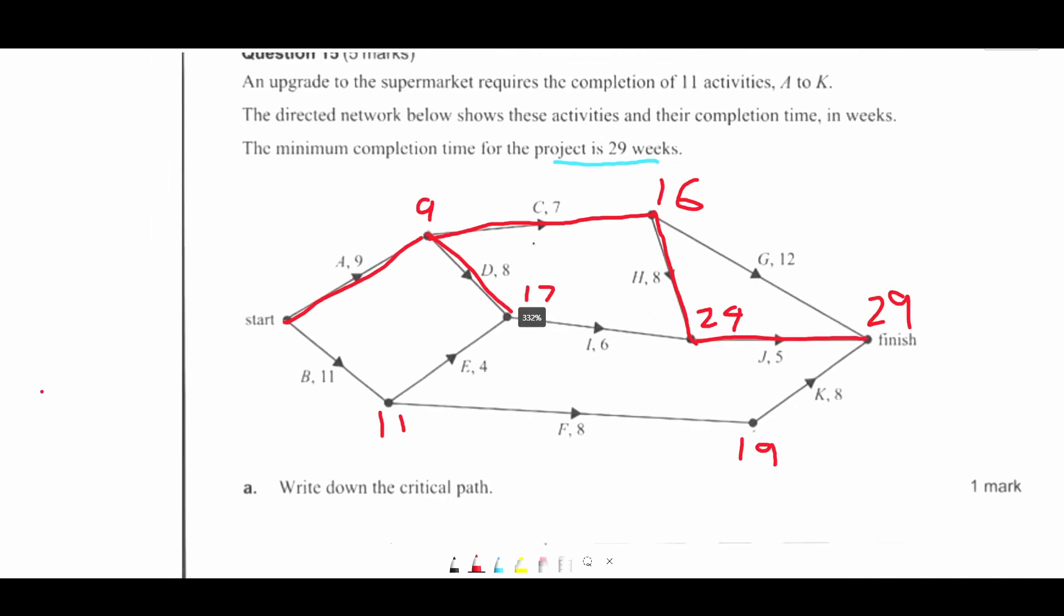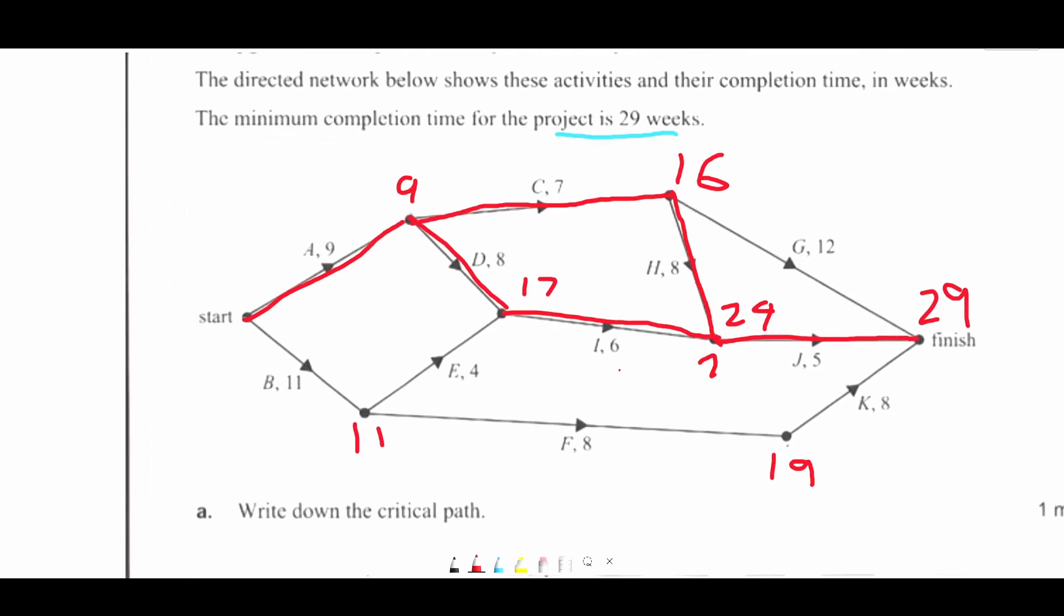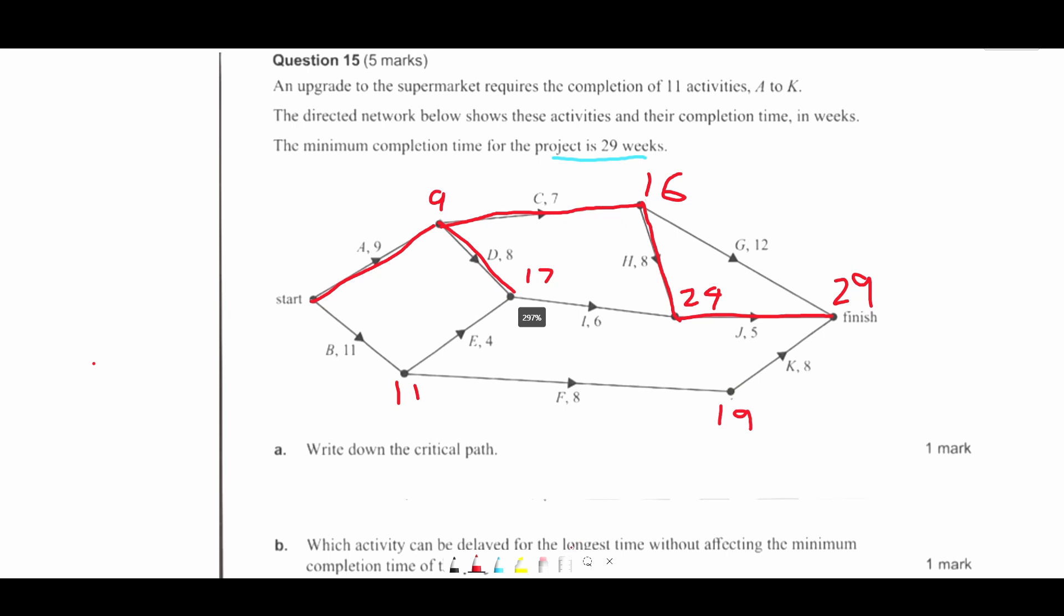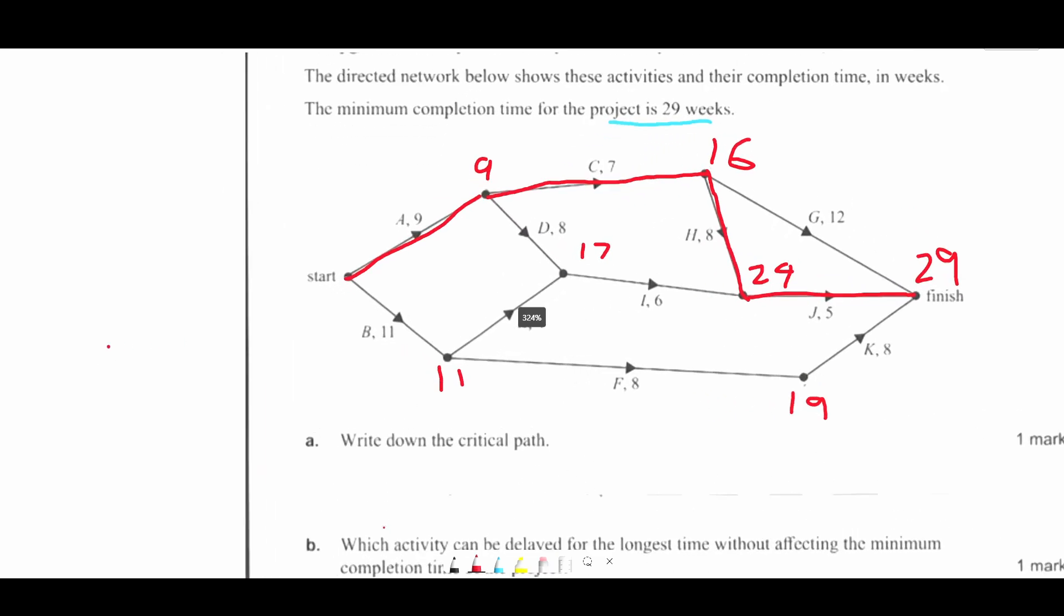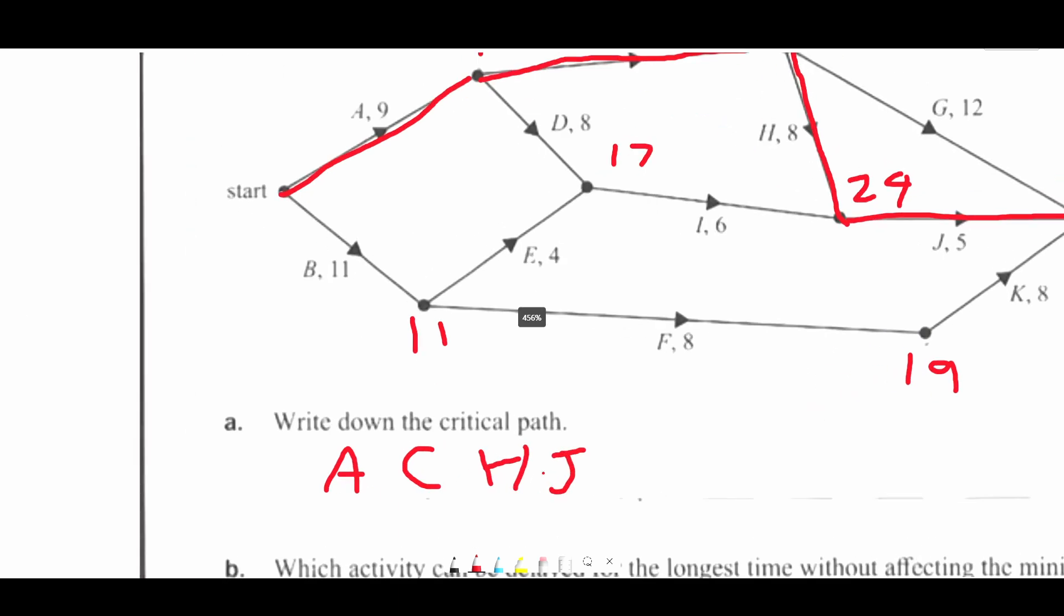So going down this way would be 23. That's not on the path. So therefore our critical pathway is going to be A C H J. I'm not really sure if you're going to add these dashes, but it wouldn't matter either way.